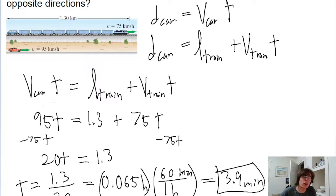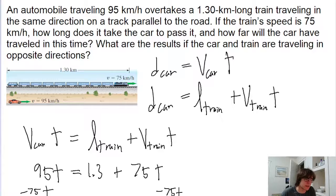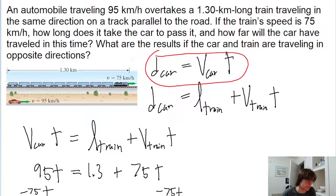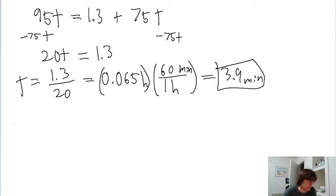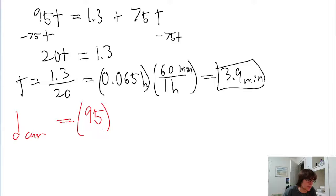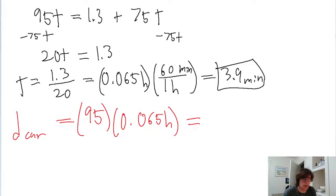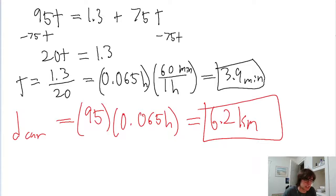The next part asks how far the car will have traveled during this time. We already established a formula: the distance the car travels equals the speed of the car multiplied by the time. The speed of the car is 95 kilometers per hour, and the time is 0.065 hours. The hours cancel out, and we end up with a distance of 6.2 kilometers.